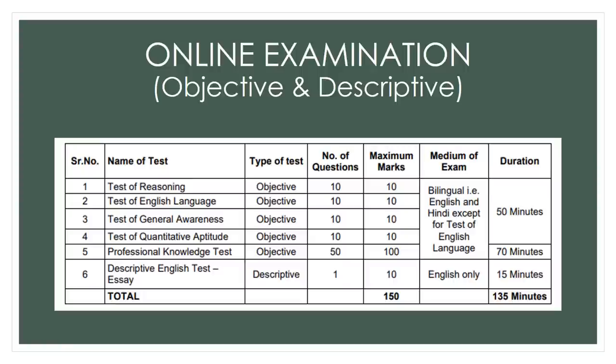After this professional knowledge test of 70 minutes is over, you come to the descriptive part. There, you have three questions and you need to answer any one of them in a timeframe of 15 minutes. You cannot go back to previous sections. After you proceed to the next section, you leave behind the previous one. This is how the test is conducted over a period of 135 minutes, that is 2 hours and 15 minutes roughly.